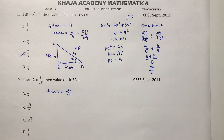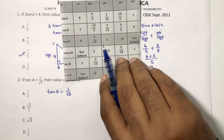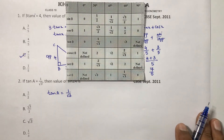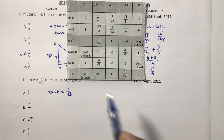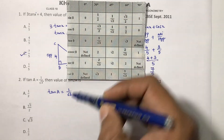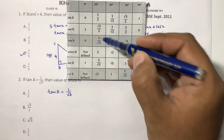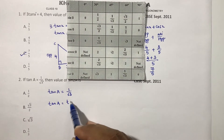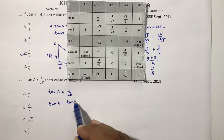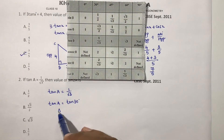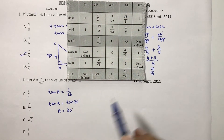Take the help of a trigonometry ratios table. In the tan column, check when you get 1 by root 3 — that is at 30 degrees. So tan A equals tan 30 degrees. On comparing, you get the value of A as 30 degrees.